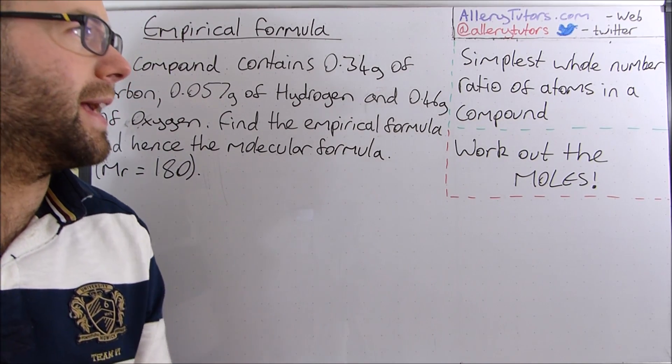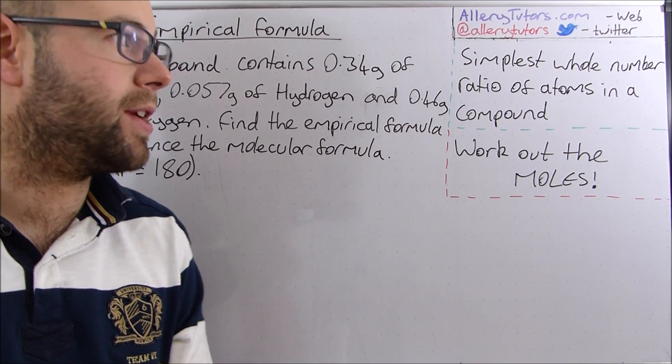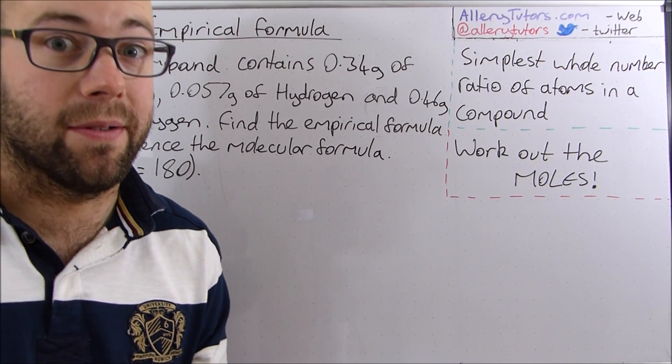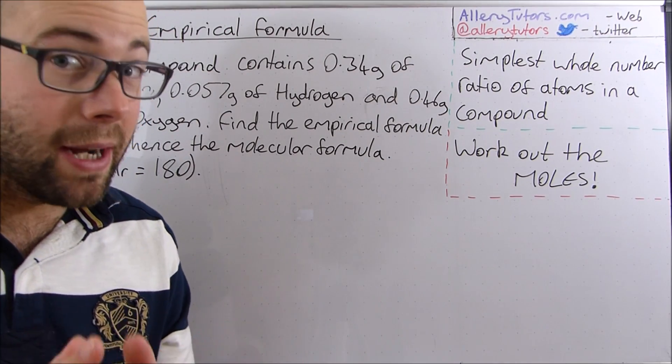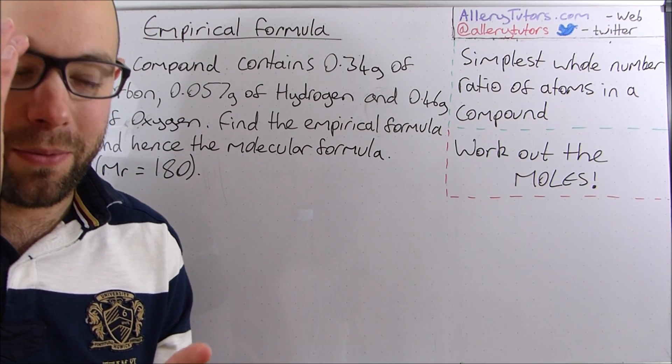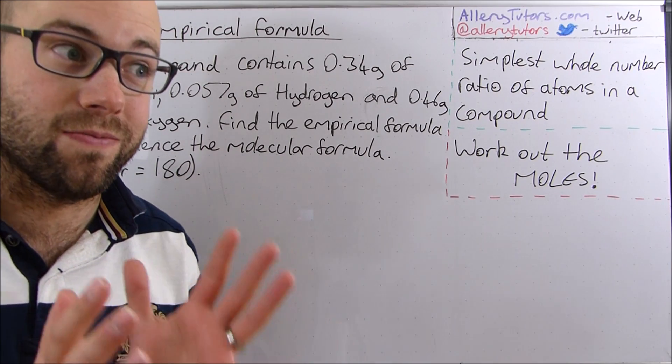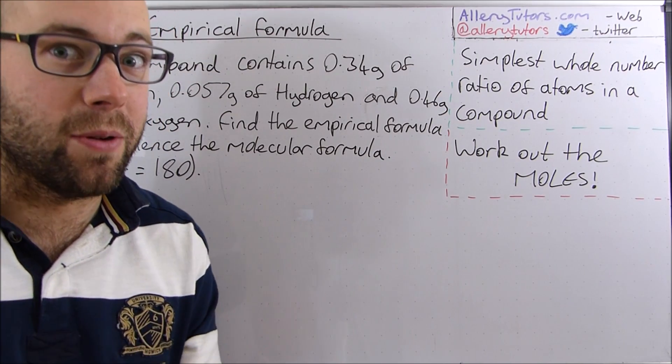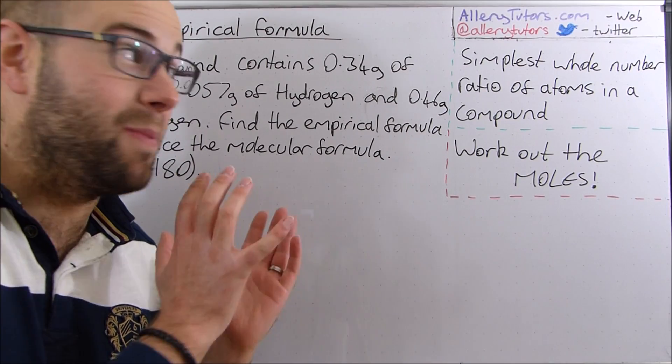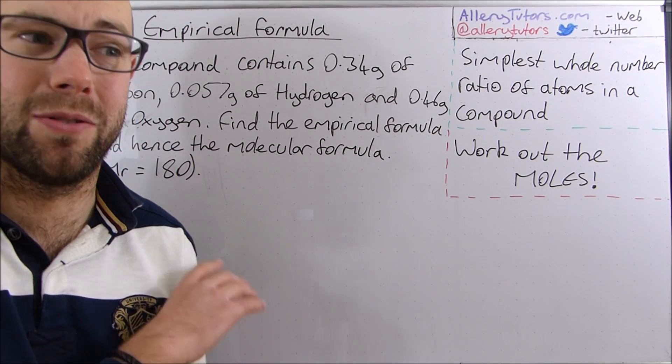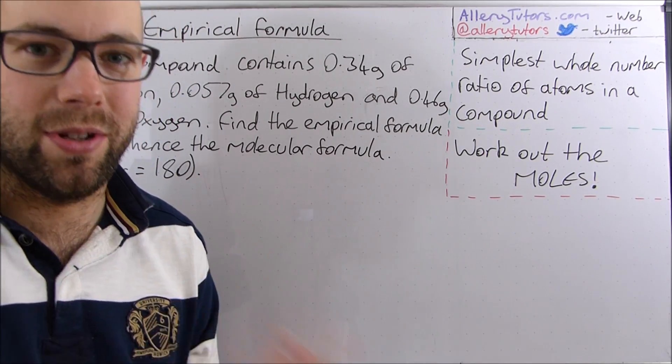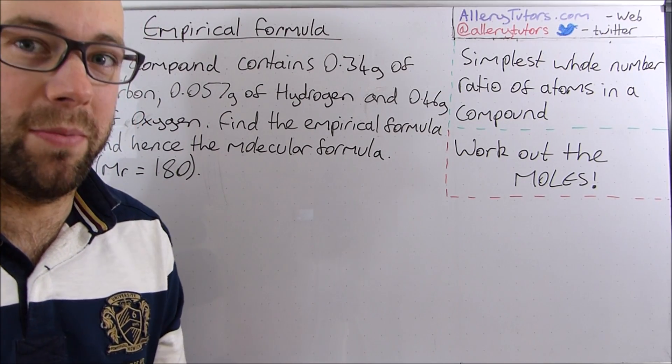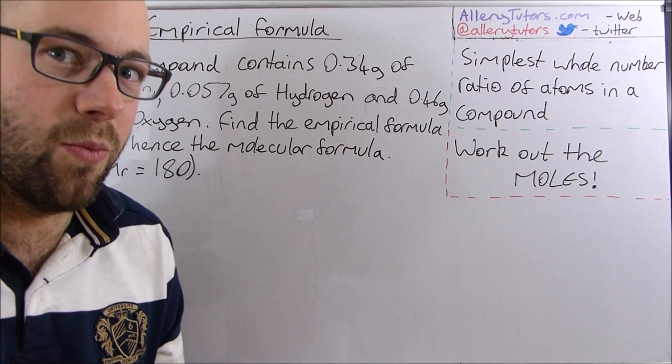So an empirical formula is the simplest whole number ratio of atoms in a compound. You might look at some empirical formulas and think what on earth is that because it looks really weird, it doesn't look as though it chemically works. When we look at the example you'll see what I mean it looks really odd and then I'll show you how to work them out and hopefully it shouldn't look so weird.